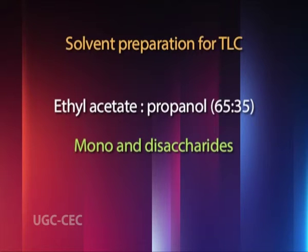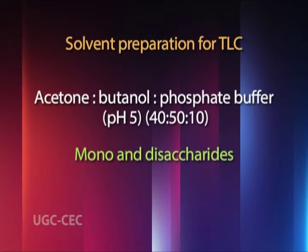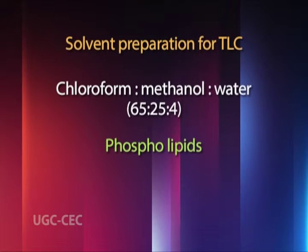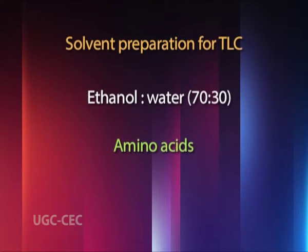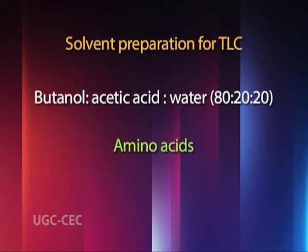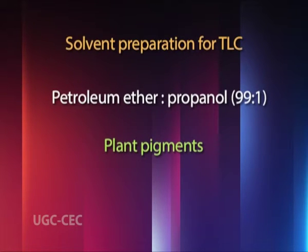Ethyl acetate:propanol (65:35) is used for separation of mono- and disaccharides. Acetone:butanol:phosphate buffer pH 5 (40:50:10) is also used for mono- and disaccharides. Chloroform:methanol:water (65:25:4) is used for separation of phospholipids. Ethanol:water (70:30) is used for separation of amino acids. Butanol:acetic acid:water (80:20:20) is also used for amino acids. Petroleum ether:propanol (99:1) is used for separation of plant pigments.